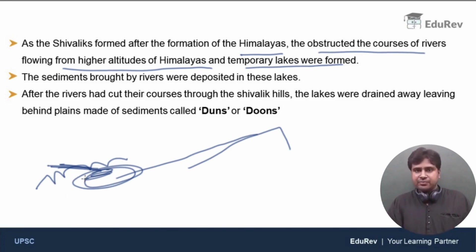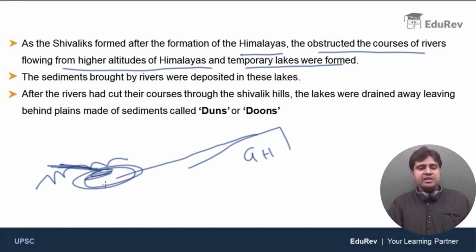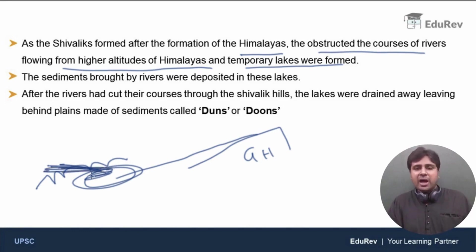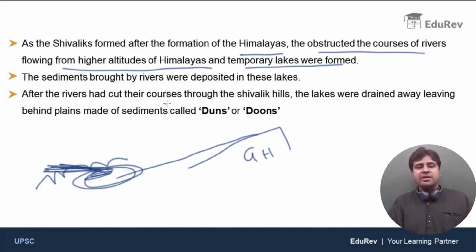Shivaliks formed at the end. The rivers flowing from the Great Himalayas and Middle Himalayas were blocked by the Shivaliks, so temporary lakes were formed and filled with sediments. Rivers and streams, being among the most powerful erosional forces, eventually cut through the Shivaliks, formed valleys, and the water got drained away, leaving behind the sediments. After the rivers cut through the Shivalik Hills, the lakes were drained away, leaving behind plains made up of sediments.